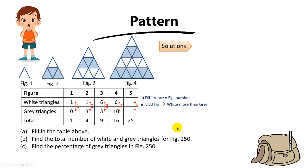What is the second pattern? When the figures are odd — figures 1, 3, and 5 — the white triangles are more than the grey triangles. This is important because it tells you how to solve this question. For figure 5, since it's an odd figure, the white triangles will be more than the grey triangles by 5.